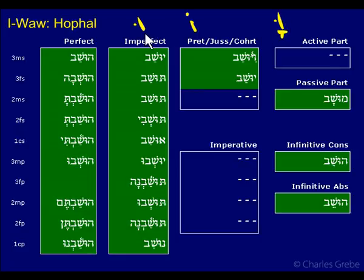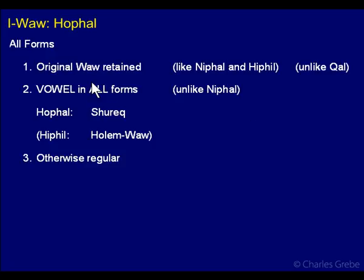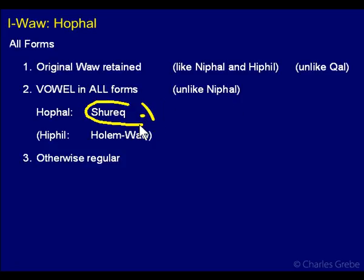Here you know this is a vowel — a vocal shva — because you need to have a vowel in there somewhere, and this is the only thing you have. So don't get these confused. The hofal retains the original vowel, like the nifal and hiphil, unlike the qal. The original vav is retained as a vowel in all forms, unlike the nifal where it shows up as a vowel only in the perfect and the participle — in the other forms it shows up as a consonant. It shows up as a shuruk in the hofal; that's the key thing. In the hiphil, it showed up as a holam vav.